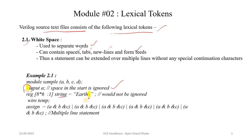Here we have an assign statement which is extended over two lines. At the end of the line, we have just put a white space and it will extend to the next line without using any special continuation character. So white space is useful in statements which extend over multiple lines.